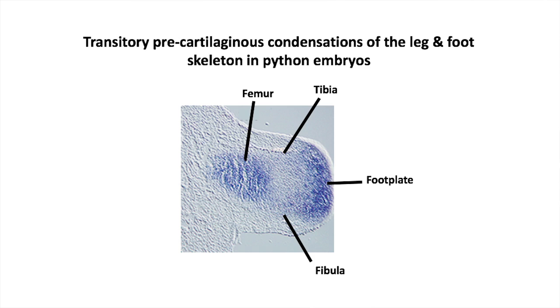Now this doesn't persist beyond hatching, but it tells us that pythons are going much further in hind limb development, laying down the anlage of the hind limb skeleton all the way to the foot.